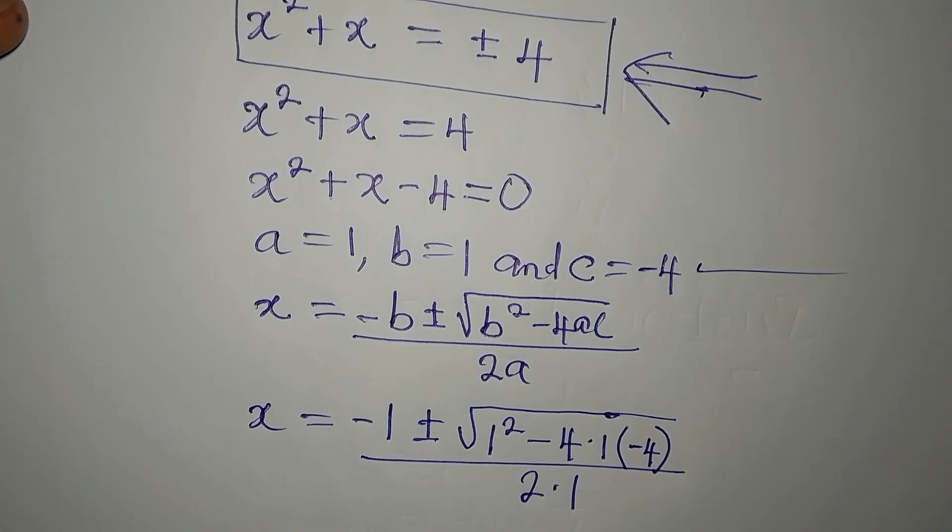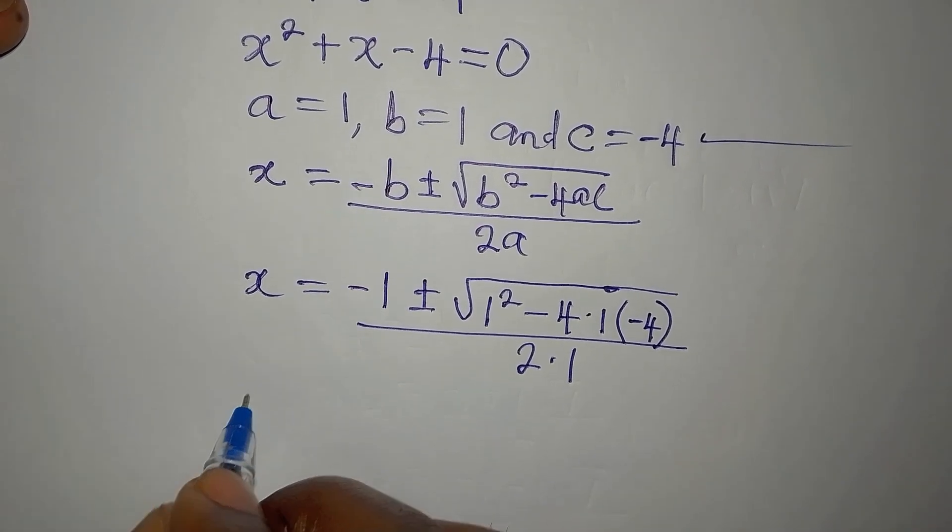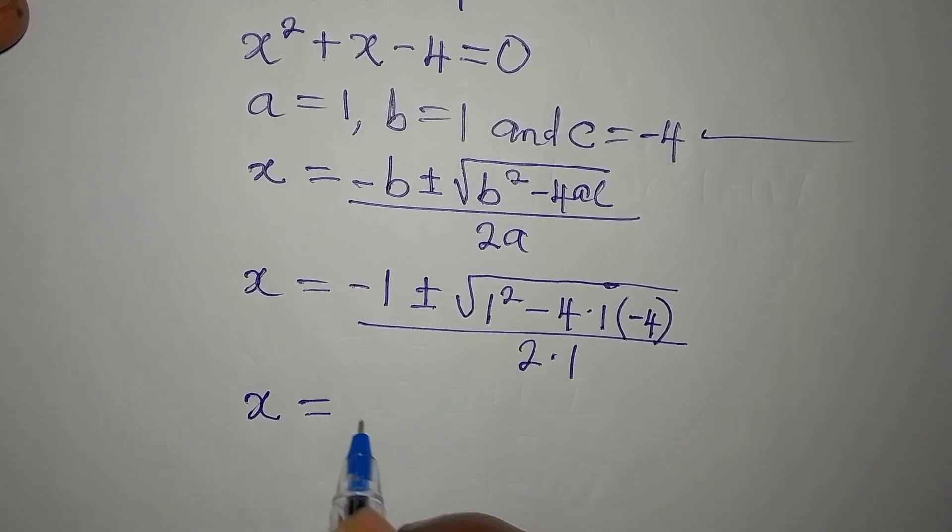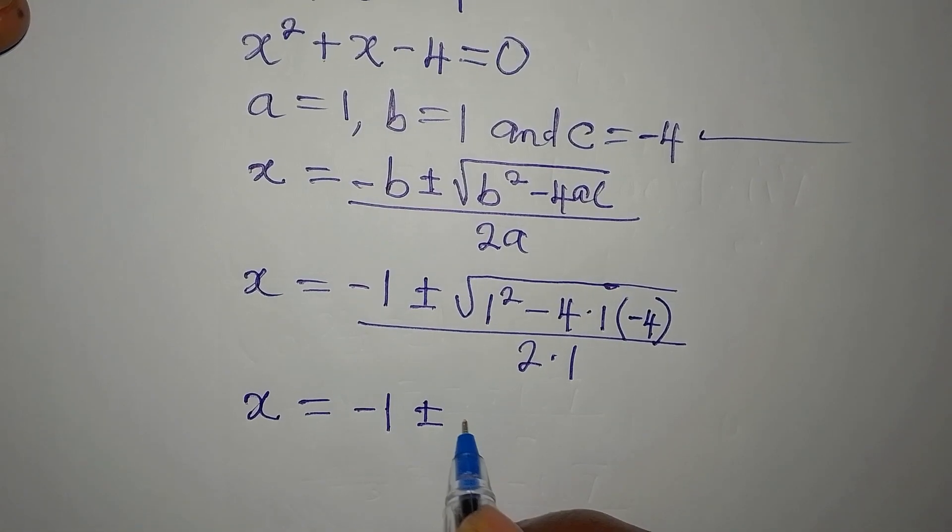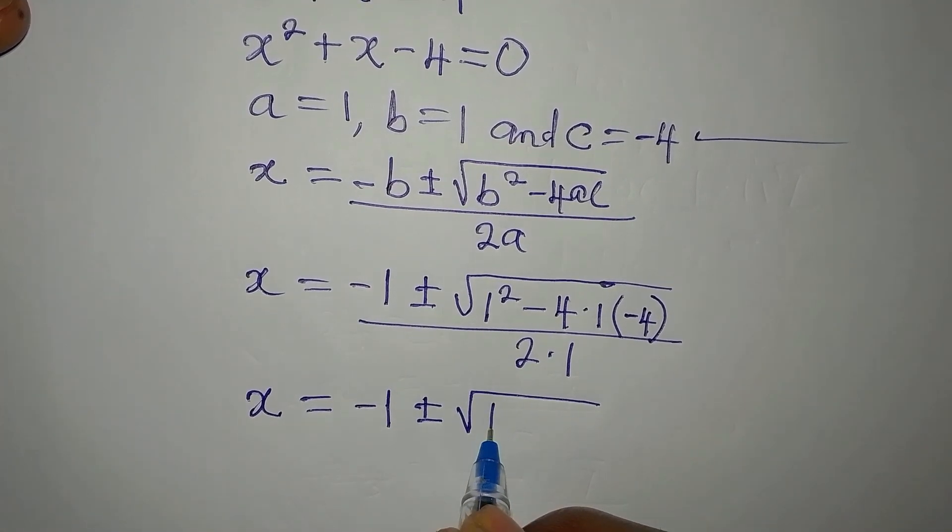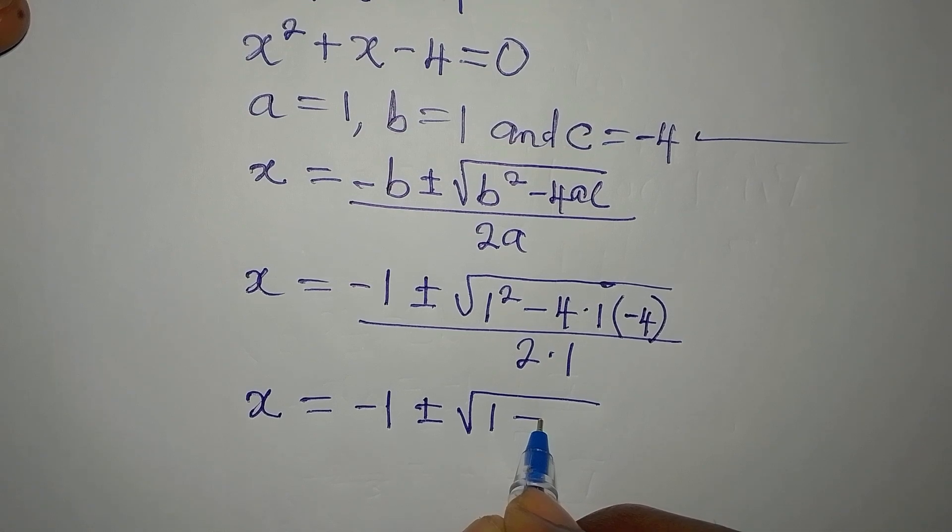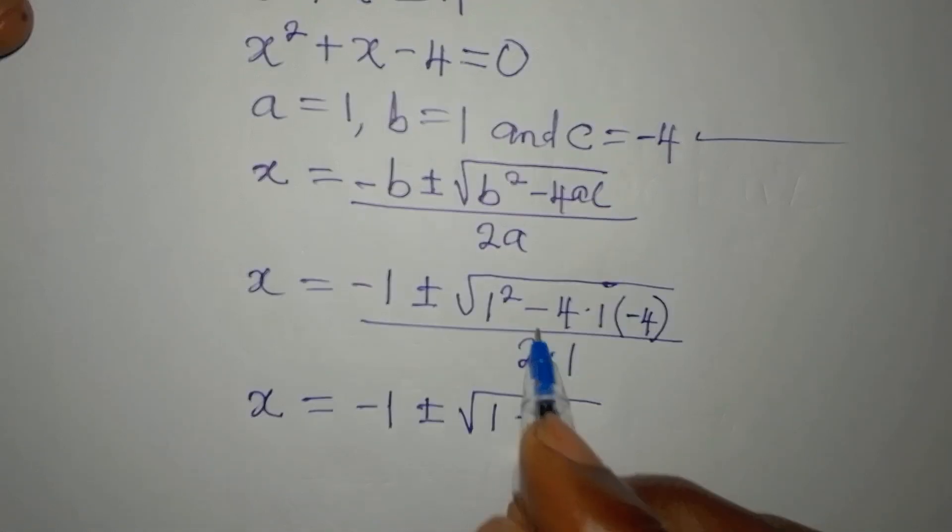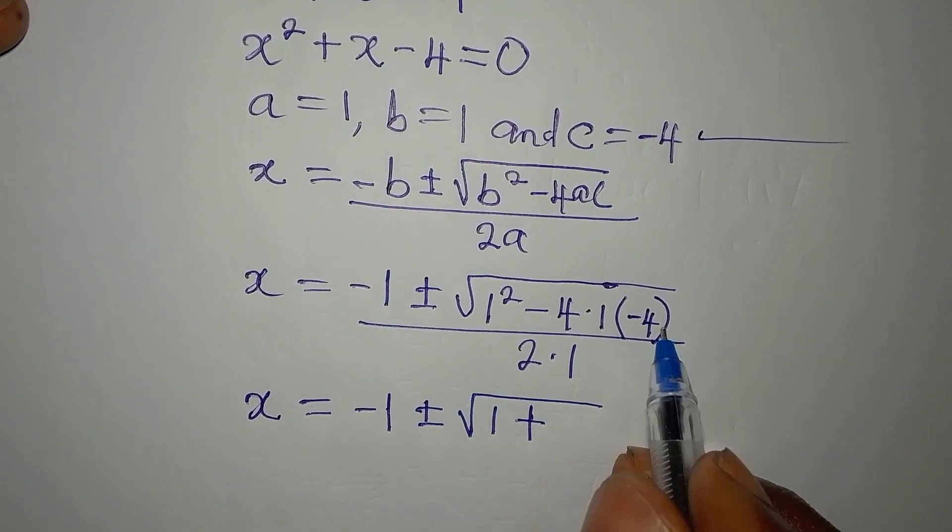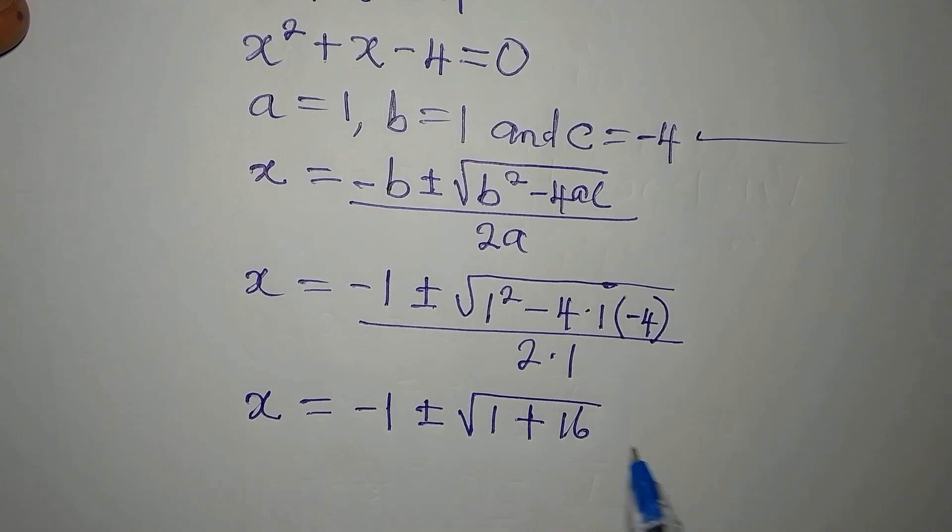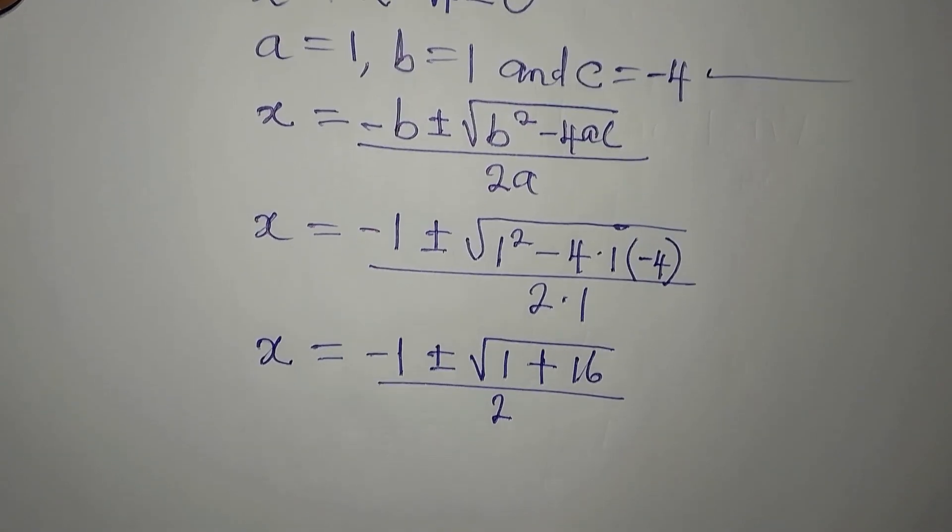So if we go ahead now, we are going to have our x to be equal to minus 1 plus or minus the square root of 1 squared is 1 minus 4 times 1 times 4. By the way, minus times minus 4. That would be 16. Then we divide this by 2.